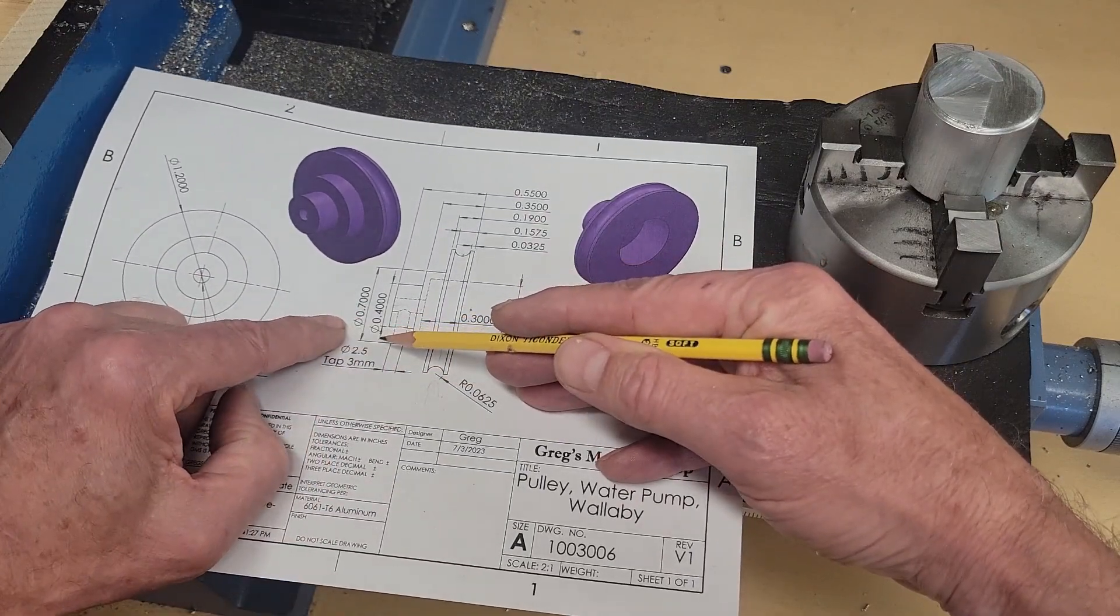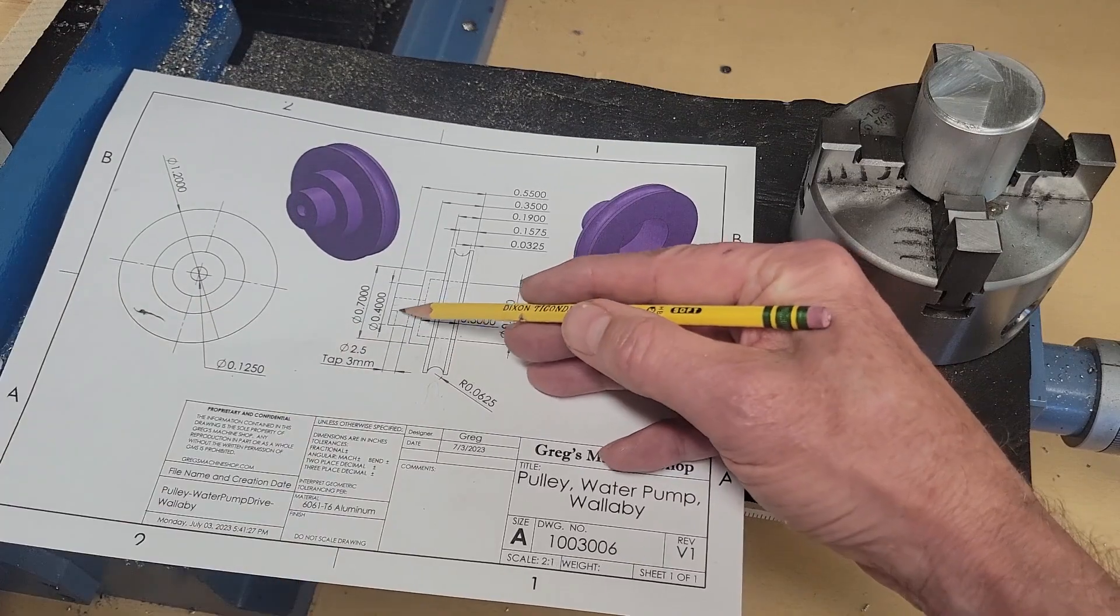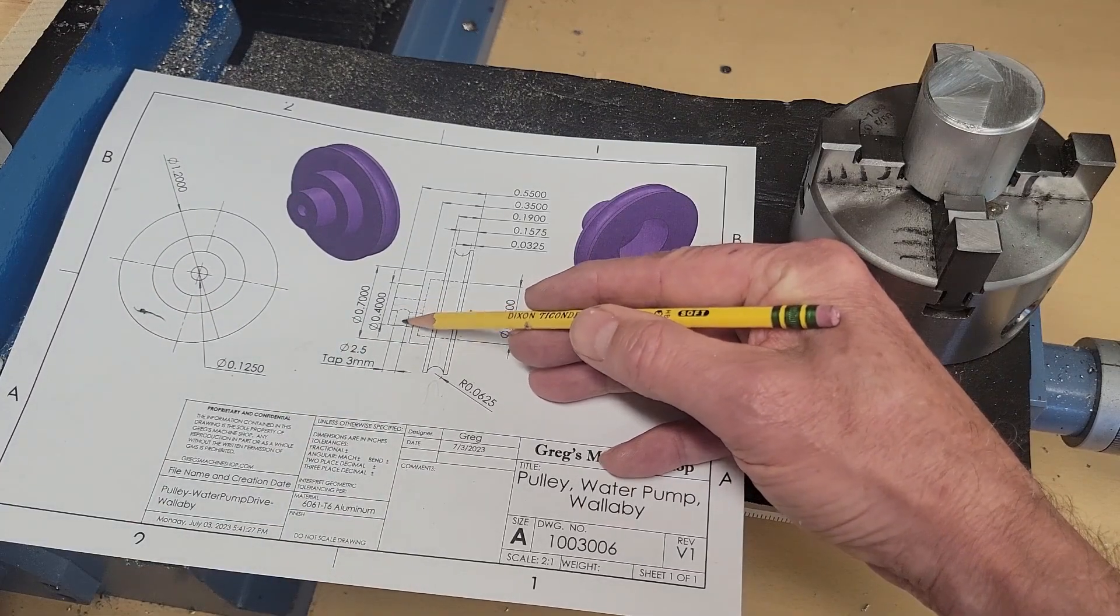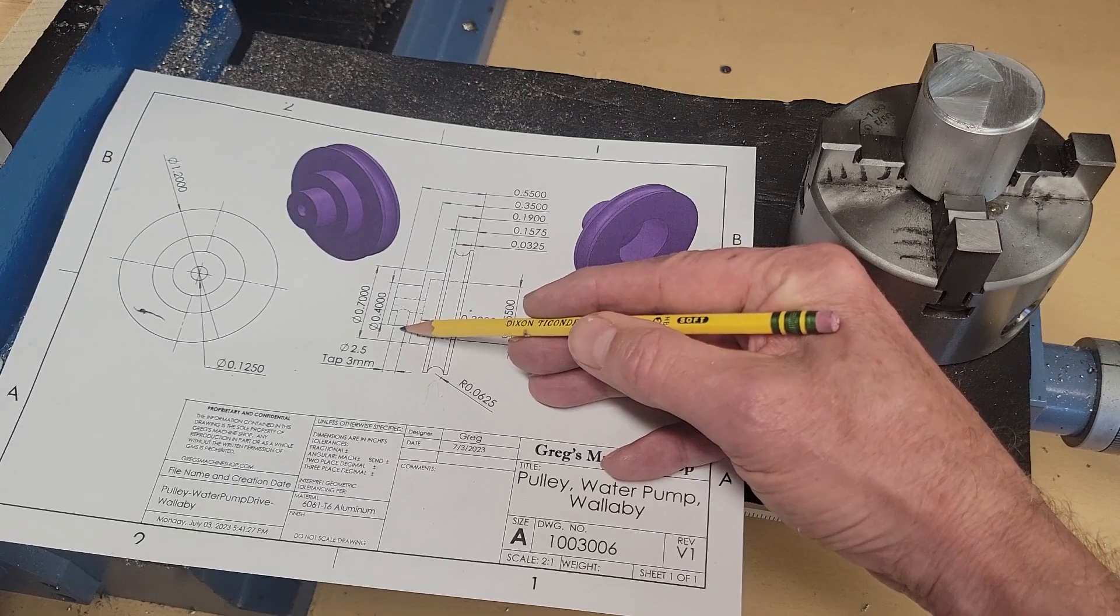Then the rest of it is not quite as critical. We'll machine the backside out from the back, cut it, part it off, and we'll worry about this set screw hole later. We'll do that in the middle.